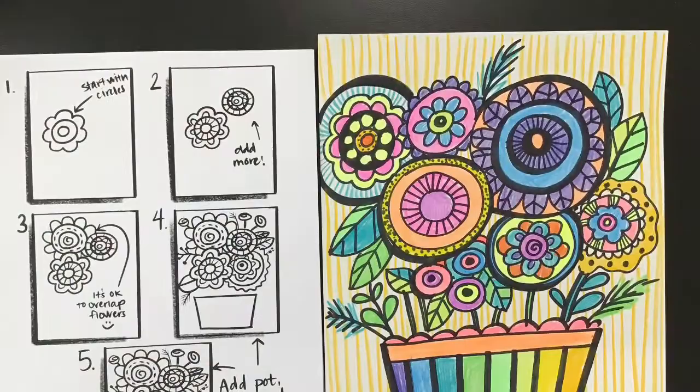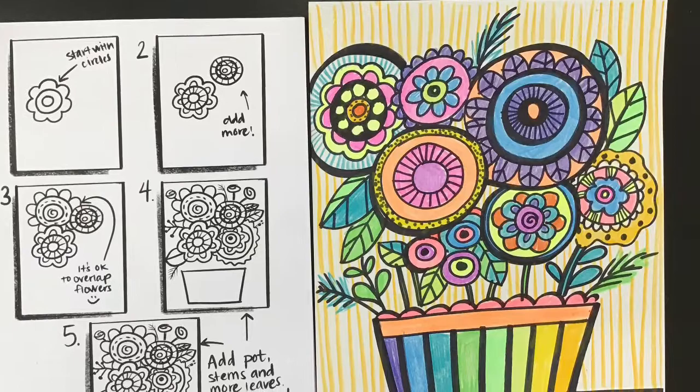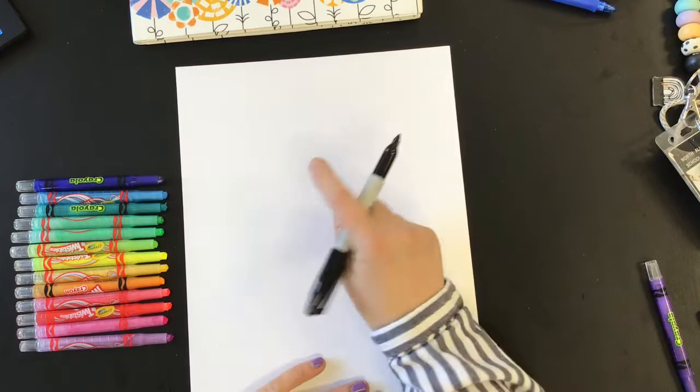For today's project I have a worksheet for you to follow where you can add your own flair to the project or you can follow along with me. The first thing I'm going to do is find a spot somewhere in the middle of my paper and start with a circle.